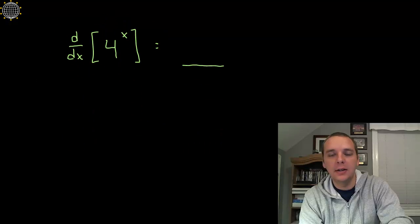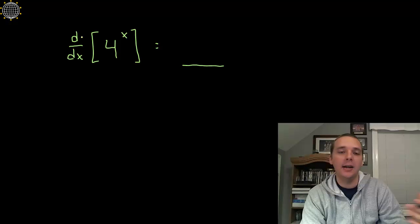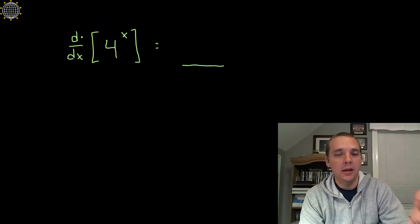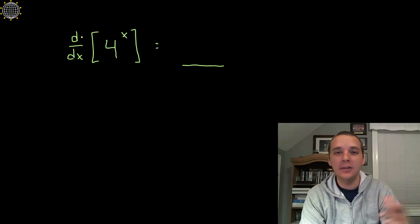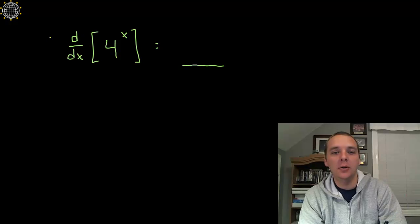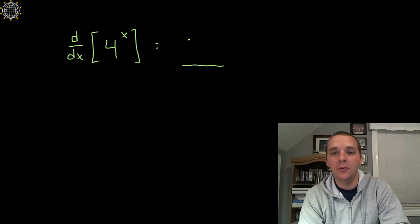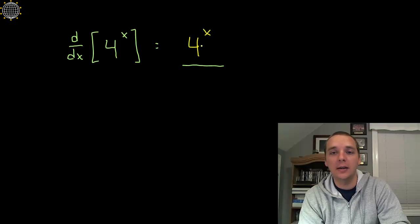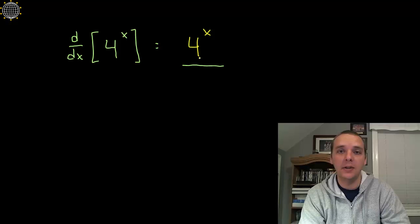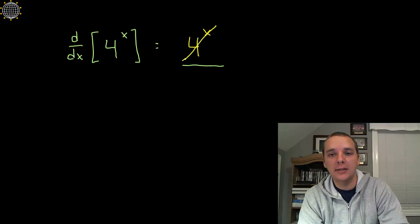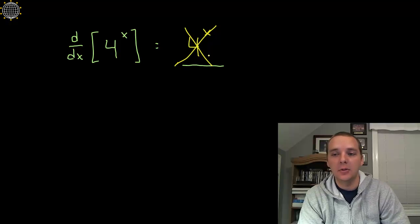What if we wanted to take the derivative of not e to the x — which is just 2.718, somewhere between 2 and 3 — but instead 4 to the x? It would be great if the derivative were simply 4 to the x, just like the derivative of e to the x is e to the x. But unfortunately that's not the case. The derivative of 4 to the x is not 4 to the x.